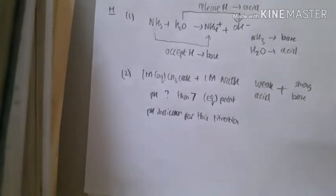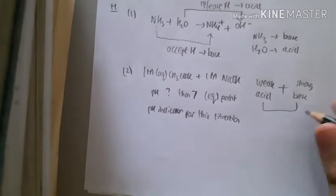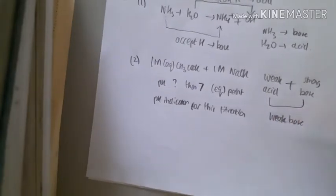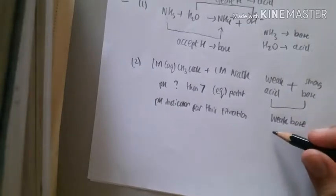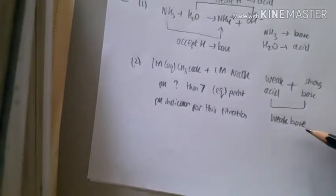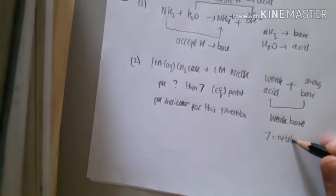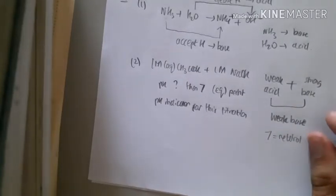Remember, if you have weak acid, strong base, it will always result into weak base. Now, weak base is slightly greater than 7, because 7 is neutral in pH value.